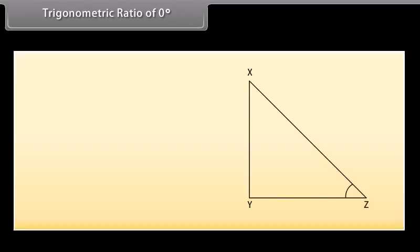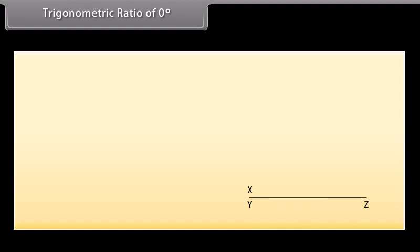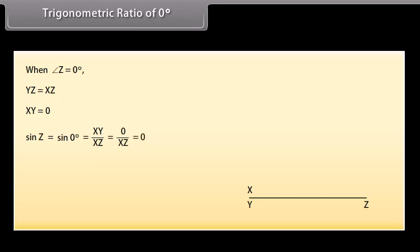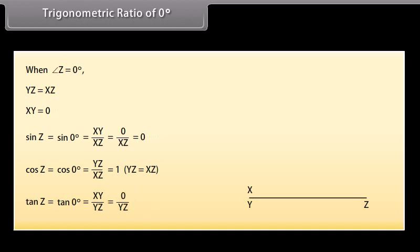Trigonometric ratio of 0°. Consider the right-angled triangle XYZ. Reduce the measure of angle Z slowly. You can see that XZ rotates left and becomes flatter. When angle Z is reduced to 0°, XZ merges with YZ and the length of XY is 0. Therefore: sin 0° = XY/XZ = 0/XZ = 0; cos 0° = YZ/XZ = 1, as YZ equals XZ; tan 0° = XY/YZ = 0/YZ = 0.